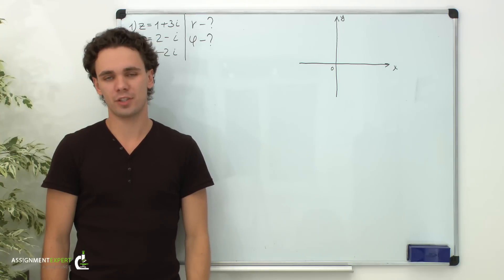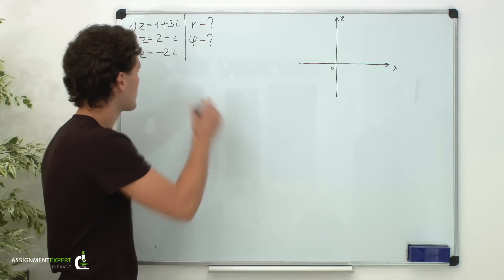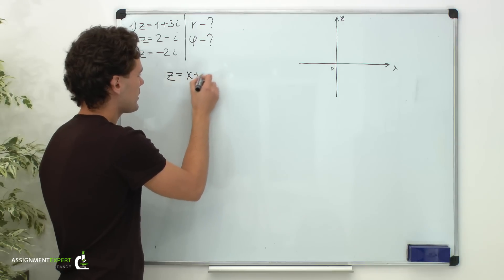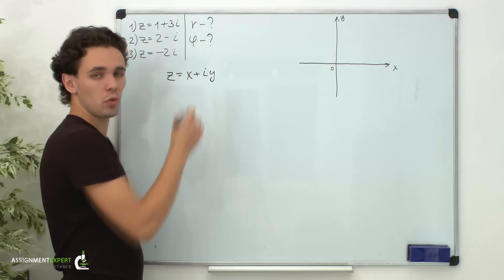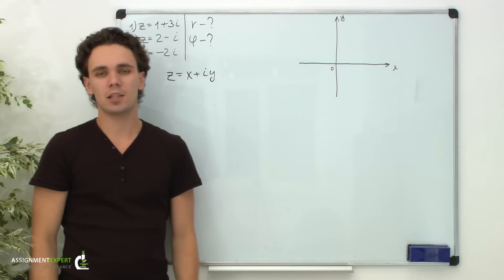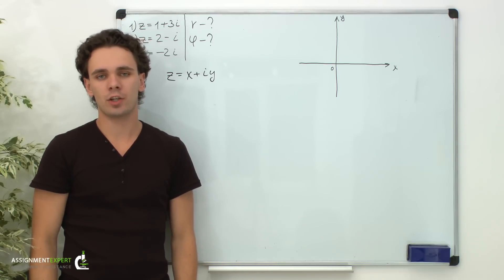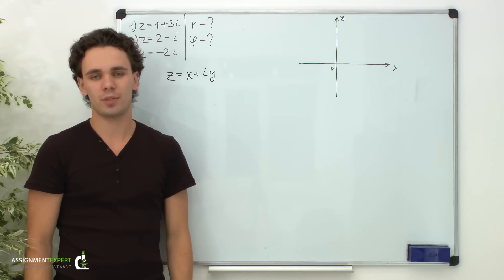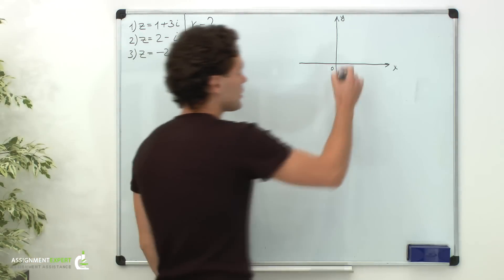First, recall the general representation of a complex number: z equals x plus i times y, where x and y are real numbers. x and y can be considered as rectangular coordinates, therefore a complex number z can be represented as a radius vector on the coordinate plane.